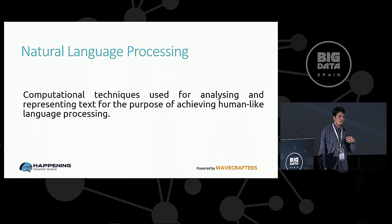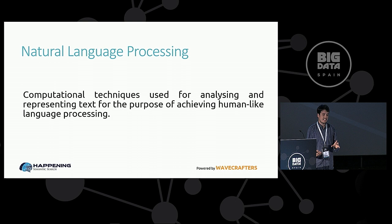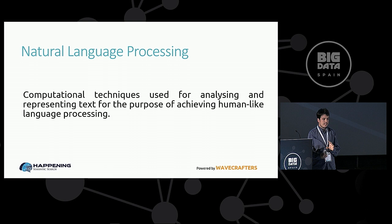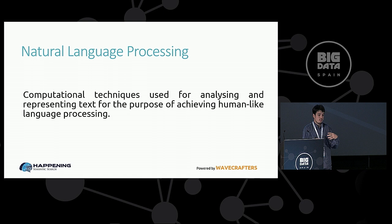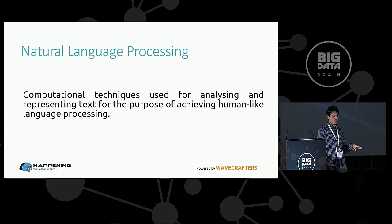So what is natural language processing? Natural language processing are the computational techniques used for analyzing and representing text for the purpose of achieving human-like language processing. What this means is that we want the computer to actually understand language as humans do. It's a little bit like when we start to learn how to read — you start with letters, then syllables, then you are able to make up words. Right now a computer is a little bit like that. They can distinguish words, they can know which letters they are, but they don't really understand them. If you give an economics book to an eight-year-old, he can probably read it but he's not going to understand anything — and this is more or less the case with computers right now.